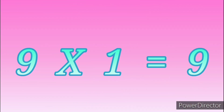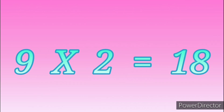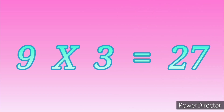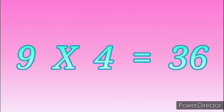Table of Nine. Nine ones are nine. Nine twos are eighteen. Nine threes are twenty-seven. Nine fours are thirty-six.